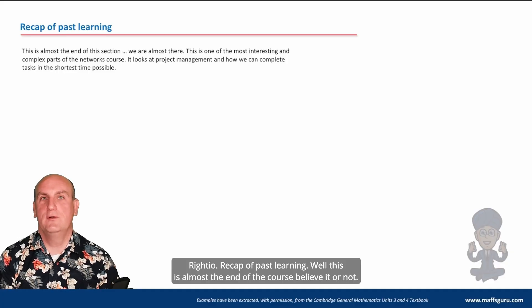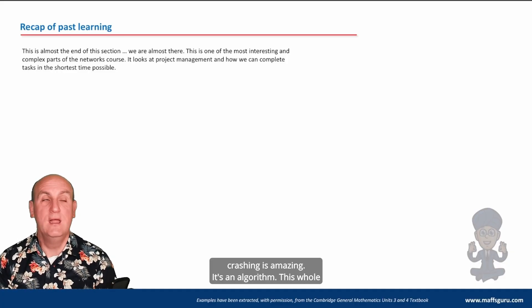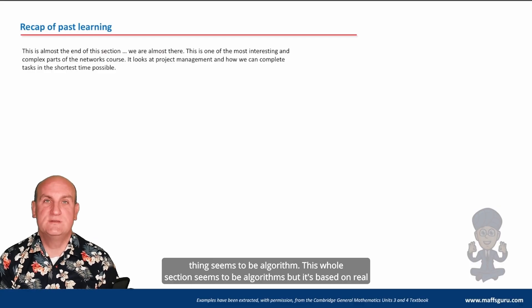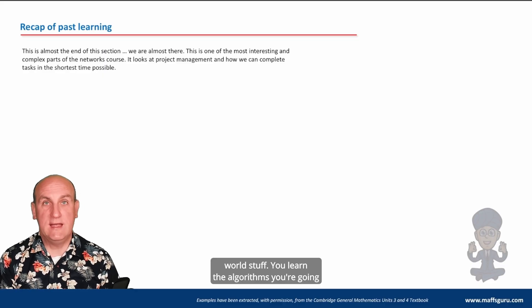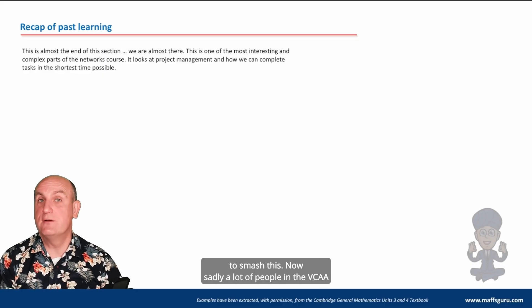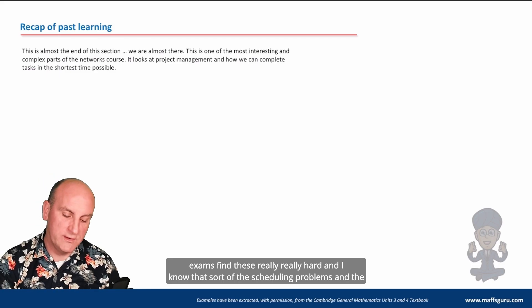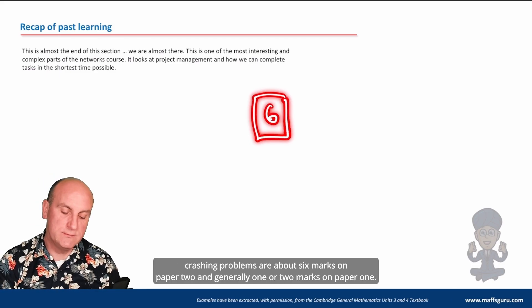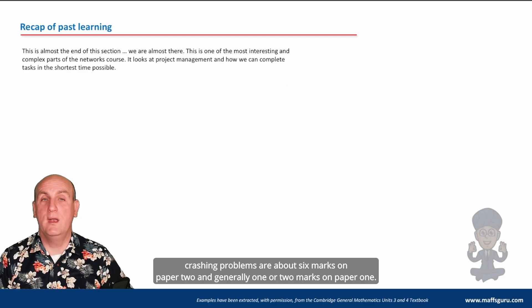This is almost the end of the course — there's this topic and then a lesson on crashing, which is an amazing algorithm. Sadly, a lot of people in the VCE exams find these really hard. Scheduling and crashing problems are about six marks on paper two and generally one or two marks on paper one — that's eight marks, which is a lot to just not bother doing.